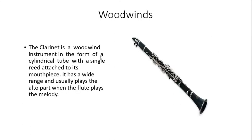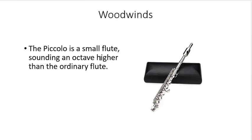Another example is the clarinet. A clarinet is a woodwind instrument in the form of a cylindrical tube with a single reed attached to its mouthpiece. It has a wide range and usually plays the alto part when the flute plays the melody. The piccolo is a small flute sounding an octave — meaning eight notes — higher than the ordinary flute, giving it a higher pitch compared to a regular flute.